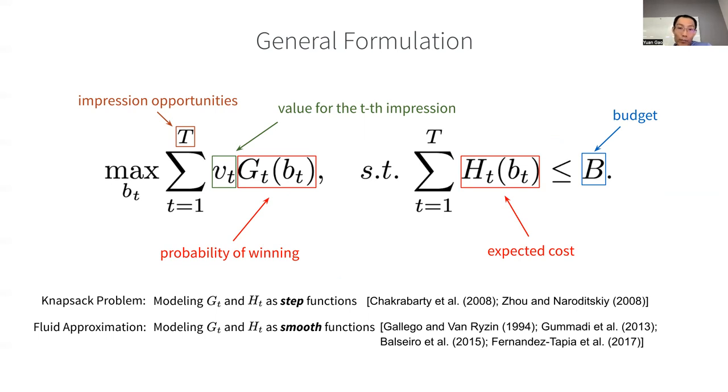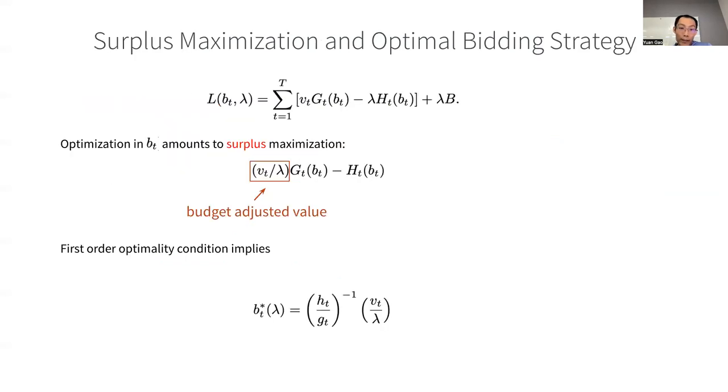Now if we introduce a Lagrangian multiplier on the budget constraint, we arrive at the Lagrangian. The optimization in bt then amounts to surplus maximization, where the surplus is defined as the difference between value and cost. Here the value is lambda-adjusted, or we can call it budget-adjusted.